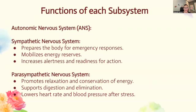Now we're going to look at the autonomic nervous system and its functions, broken into two subsystems. The sympathetic nervous system prepares the body for emergency responses — that fight-or-flight — mobilizes energy reserves, and increases alertness and readiness for action. The parasympathetic nervous system promotes relaxation and conservation of energy, supports digestion and elimination, and lowers your heart rate and blood pressure after stress.